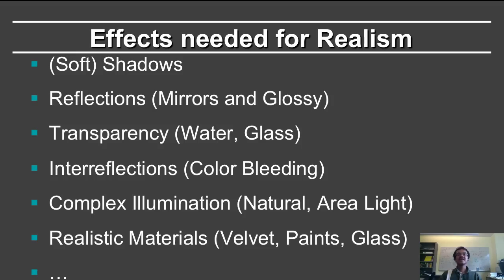First, let's consider the effects we need to create realistic images. One effect is shadows, and often we want to consider shadows from an area light source or diffuse lighting, in which case you get soft shadows with penumbras. We want to handle reflections from mirrors and glossy surfaces, transparency from water and glass, and one surface reflecting on another. This is an effect known as color bleeding, where if you have a white surface next to a red wall, the white surface will develop a reddish tinge because of reflections from the red wall.